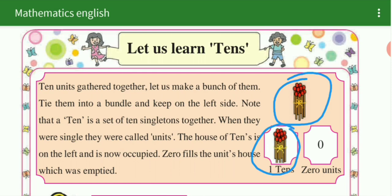This is a set of 10 single tones together. When they were single, they are called units. When they are single, see here 1, 2, 3, 4, 5, 6, 7, 8, 9, 10. When they are separate, they are called one unit.